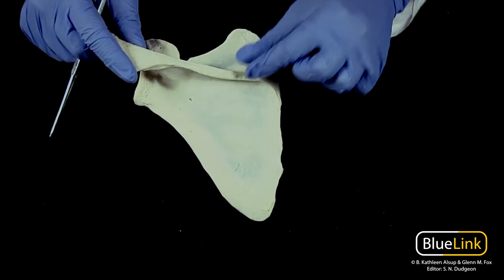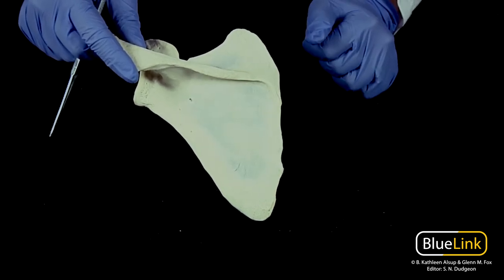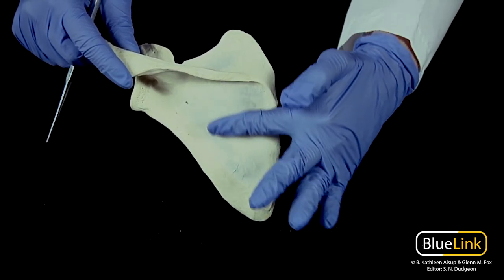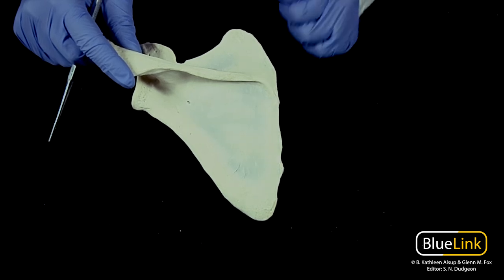Okay, so the spine is going to divide the body into two main fossa. You're going to have your supraspinus and your infraspinus. So above the spine and below the spine.